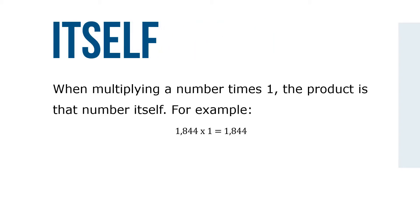When multiplying a number times one, the product is that number itself. For example, 1844 times one is 1844.